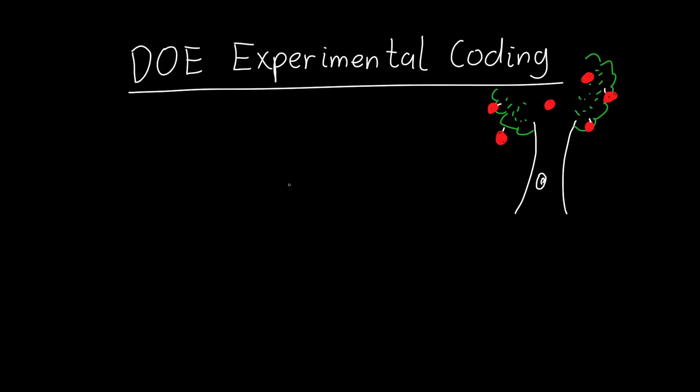In this video we're going to be talking about experimental coding in designed experiments, so converting some variable like temperature, for example, into a normalized value. So minus one, plus one, zero are the ones typically used in designed experiments. And to explore why we might want to do this and how we actually do it,